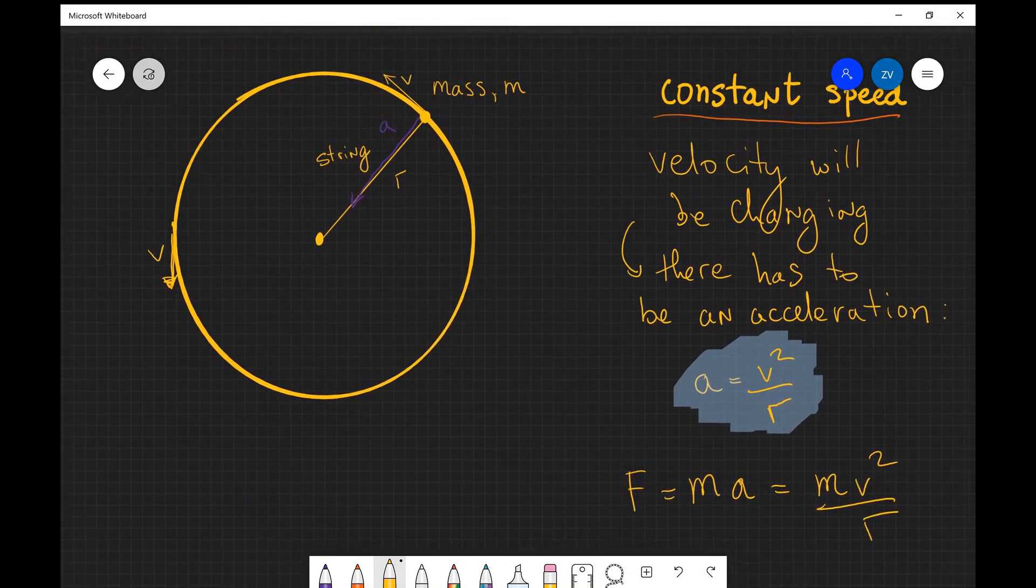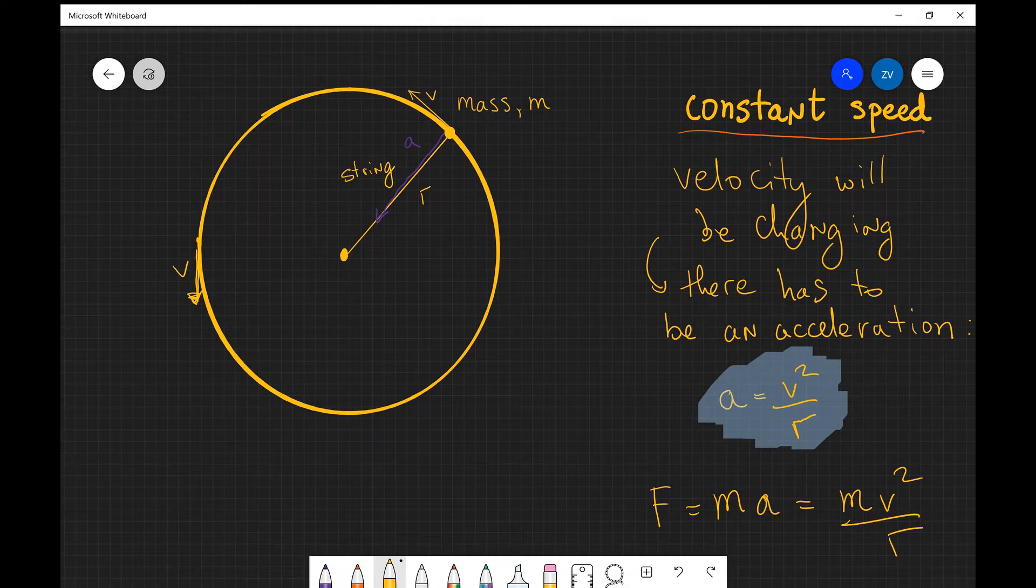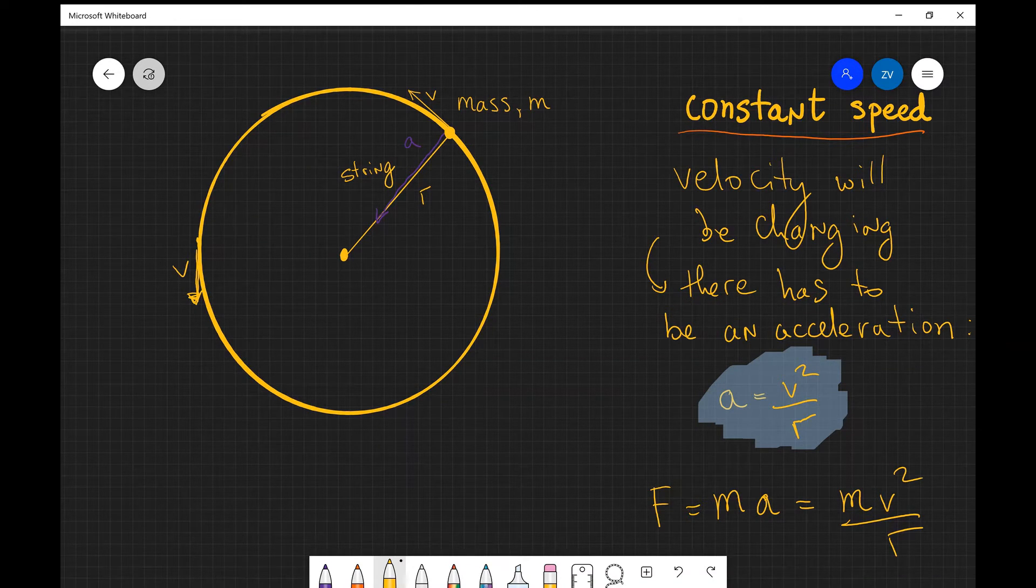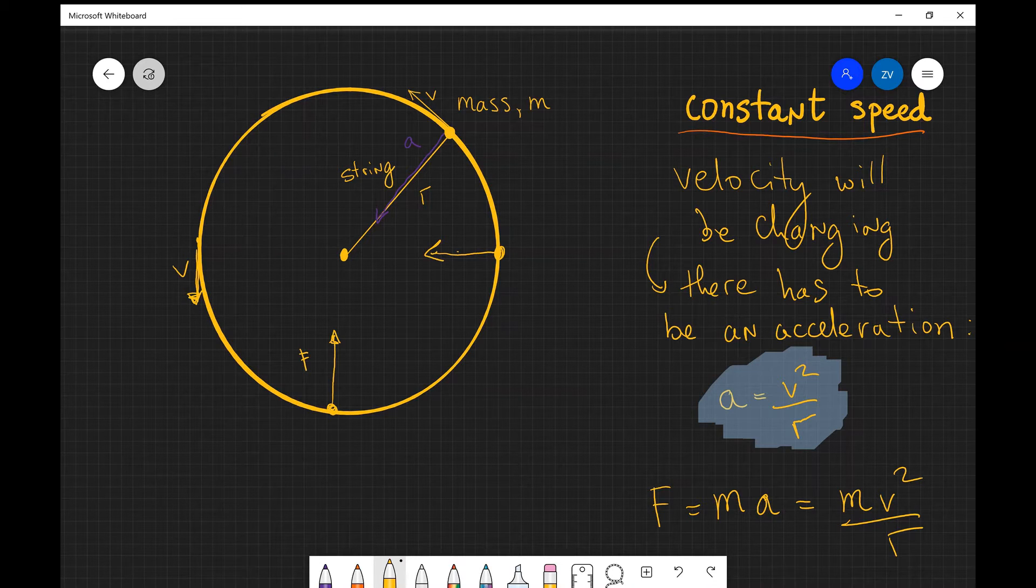This force is always acting towards the center as well. So the acceleration is acting towards the center, the force is acting in the same direction. And that means that if my mass was here, the centripetal force will be acting towards the center. It will be acting towards the center. That's a little bit more accurate. So this will be the force. If the object was here, the centripetal force will once again be acting towards the center, and the value of it will be exactly the same. So this is the force F as well.